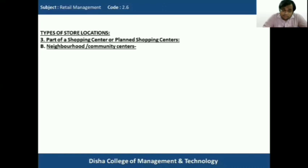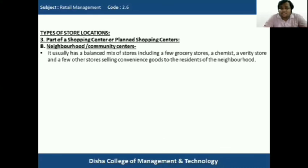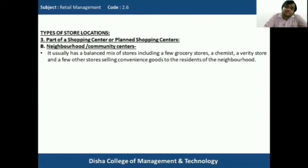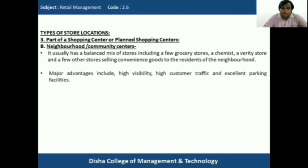The second kind of planned shopping center is the neighborhood or community center. It usually has a balanced mix of stores including a few grocery stores, chemist shops, and variety stores selling convenience goods to residents of the neighborhood. These are designed to cater specifically to the needs of the neighborhood area and its residents.